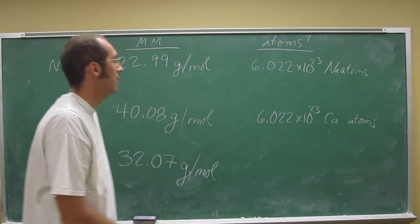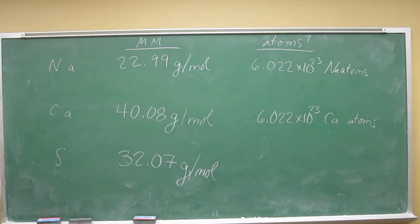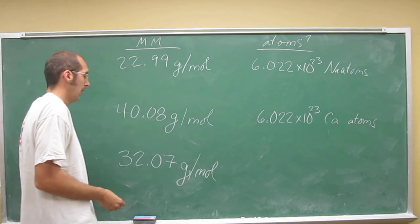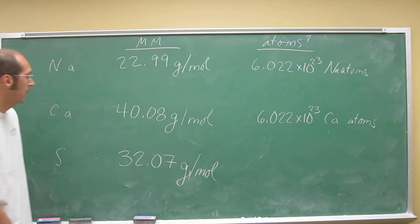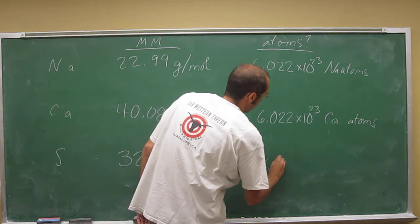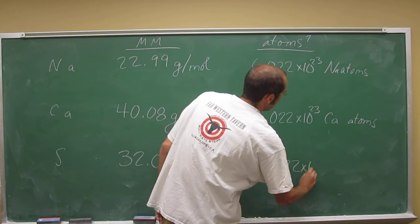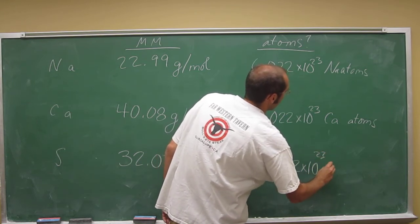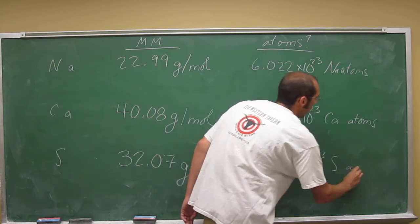Because why? Because the number 6.022 times 10 to the 23rd is a mole. That's what that term means. And then, of course, if you've got 32.07 grams of sulfur, then you must have 6.022 times 10 to the 23rd sulfur atoms.